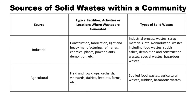Next, the industrial source. Waste from the industrial source comes from construction, fabrication, light and heavy manufacturing, refineries, chemical plants, power plants, demolition, and so on. The types of solid waste include industrial process waste, scrap materials, non-industrial waste including food waste, rubbish, ashes, demolition and construction waste, special waste, and hazardous waste.